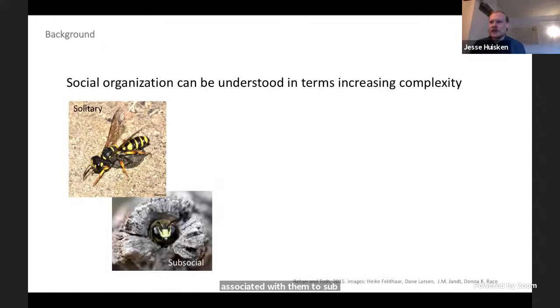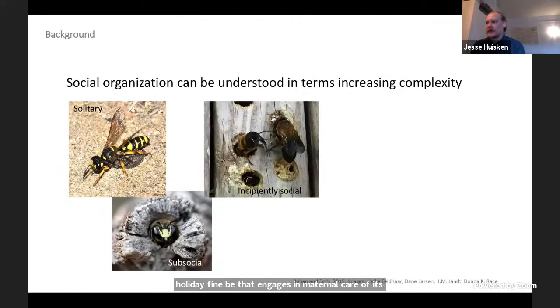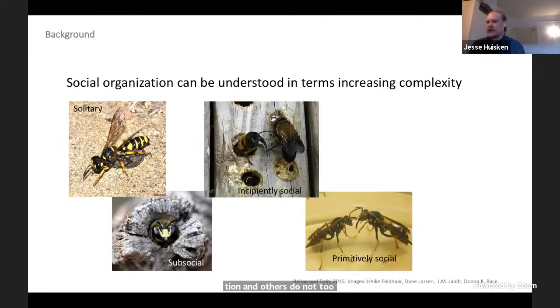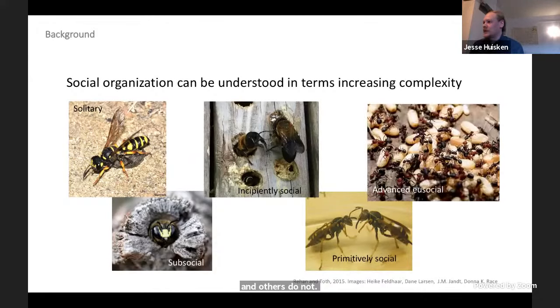To subsocial species like this allodapine bee that engages in maternal care of its offspring. To incipiently social species like Xylocopa virginica, the large carpenter bee, in which some nests have cooperation and others do not. To primitively social species in which cooperative roles are flexible and frequently determined behaviorally. To advanced social species like these harvester ants that show obligate division of labor.